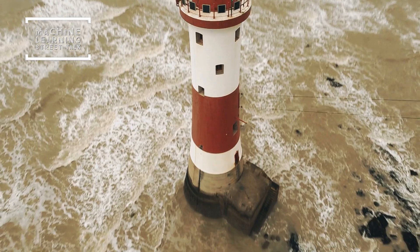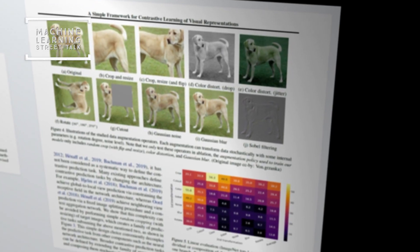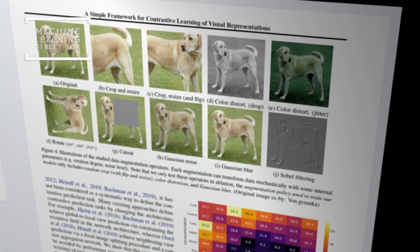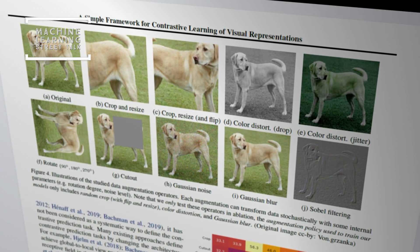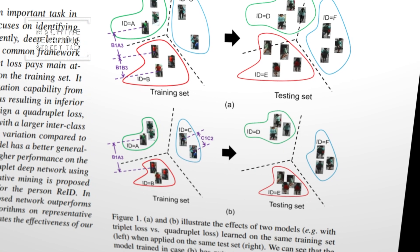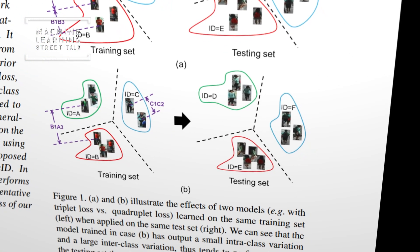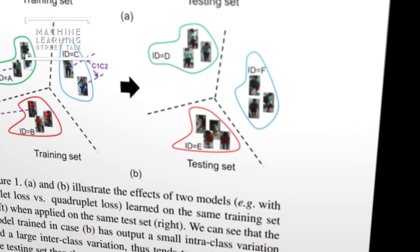The self-supervised pre-training goal is to have the neural network learn a representation such that a linear classifier trained on top of it will do well on ImageNet — but without using any labels. People came up with pretext tasks like shuffling image patches or predicting rotation. Starting around 2018, papers suggested learning a representation space where different augmentations of the same image are close together, and far apart from representations of other images. This surprisingly leads to very good representations.